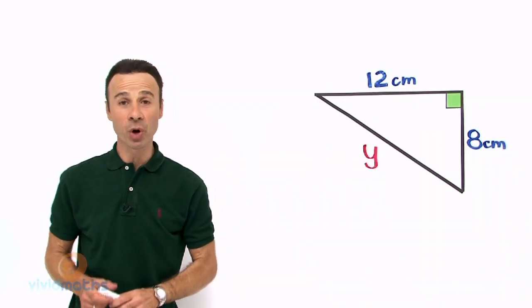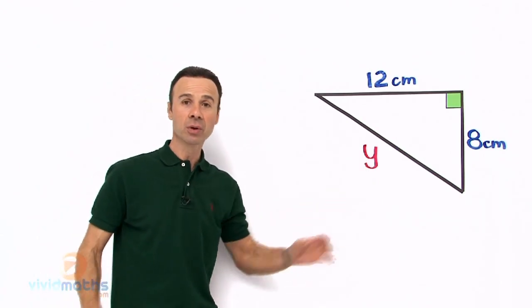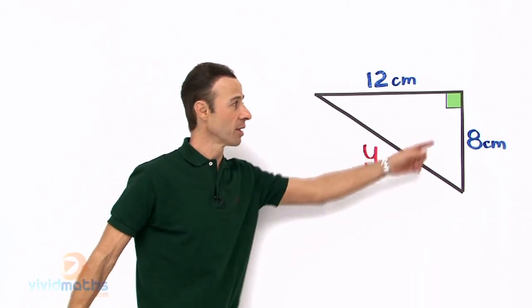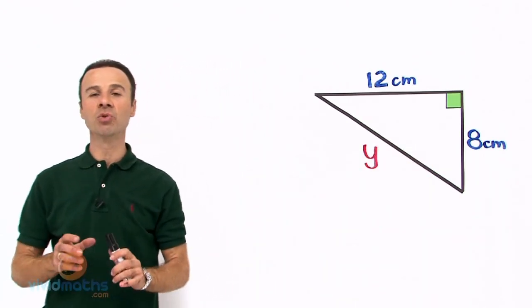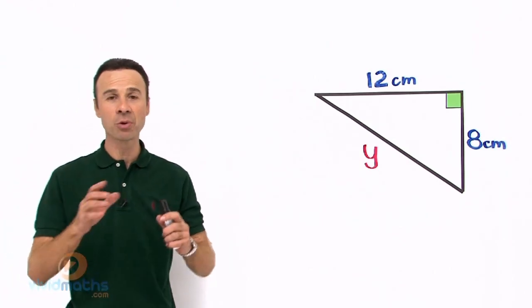When it comes to finding the missing pronumeral in a right angle triangle using Pythagoras theorem, one of the key elements is to remember that there are three steps. Let me go through the three steps.